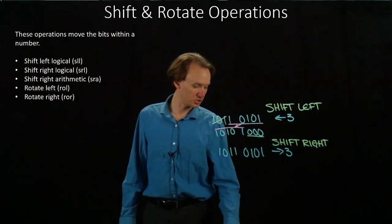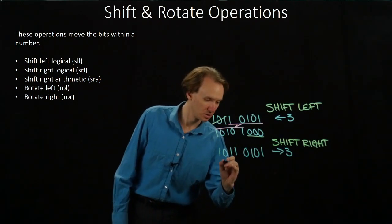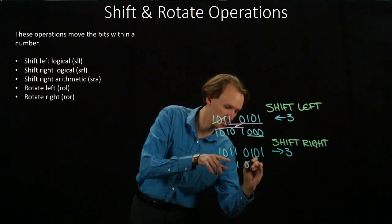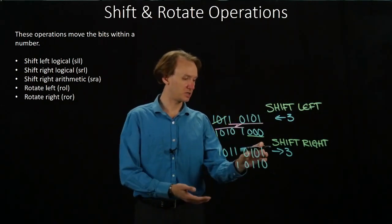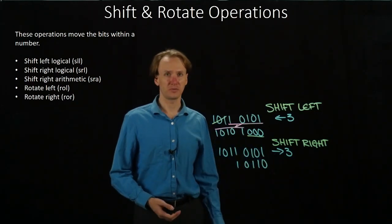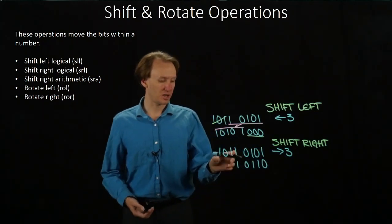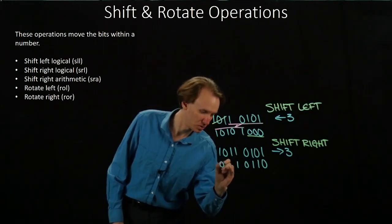So when I shift these bits right three places, I'd get 1, 0, 1, 1, 0. And then because these three bits have fallen off the right-hand side, I have three empty spaces over here that I would fill with zeros.